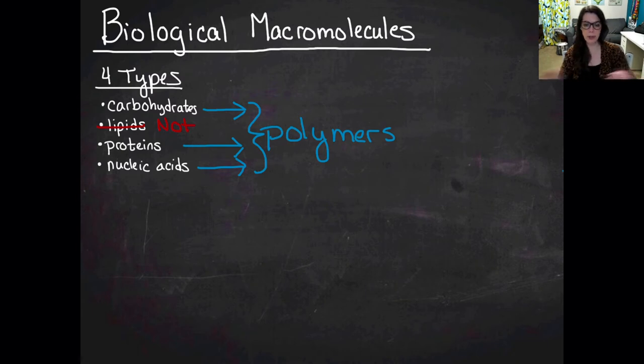So what is a polymer? Polymers are a specific type of large molecule made up of smaller molecules. And so when we're talking about biological macromolecules, we're really talking about polymers.